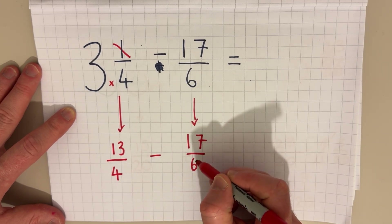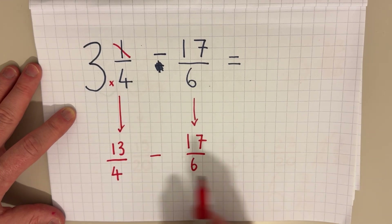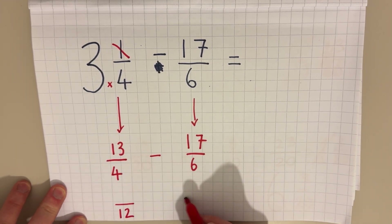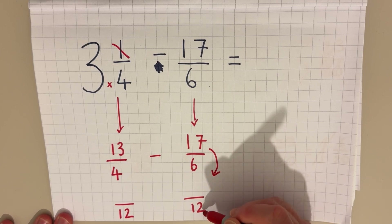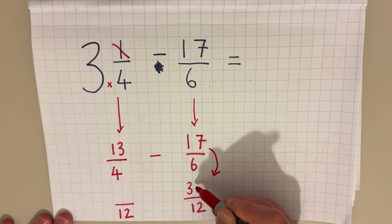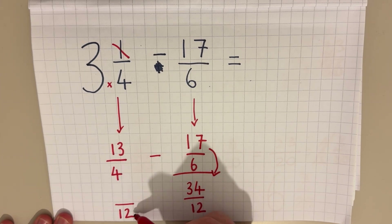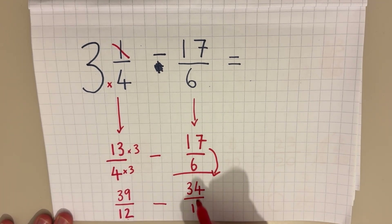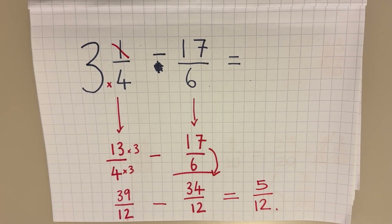I still can't subtract because I've got quarters and sixths — I need a common denominator. Four and six are both in the twelve times table, so I'll change both into twelfths. Six doubled is 12, so 17 doubled is 34 — seventeen sixths becomes 34 twelfths. Four times three is 12, so I multiply 13 by three: that gives 39 — thirteen quarters becomes 39 twelfths. Now I do 39 twelfths take away 34 twelfths, and that gives a final answer of five twelfths.